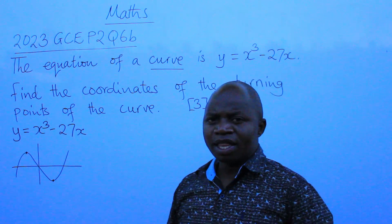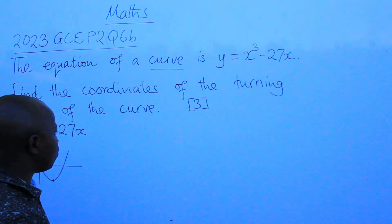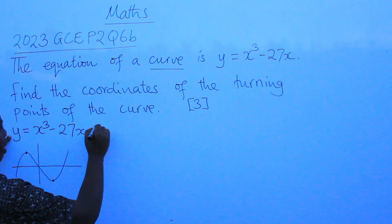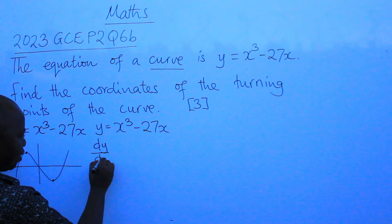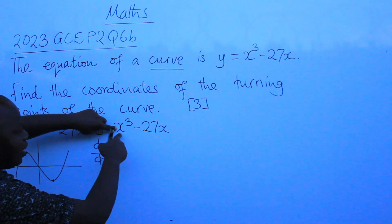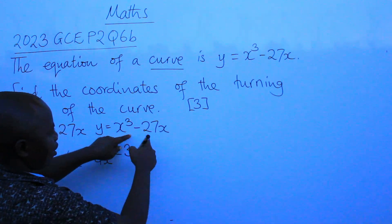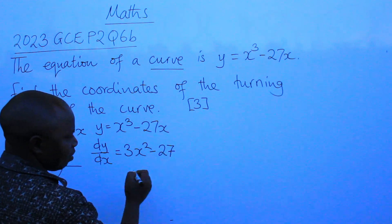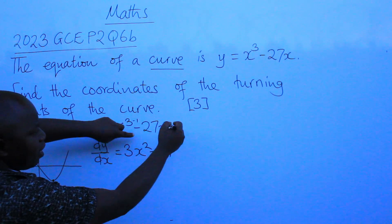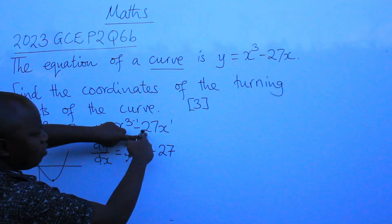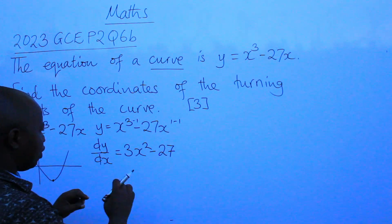To find the turning points, the first thing you do is differentiate the curve equation. So since y equals x³ minus 27x, our dy/dx will be: differentiate x³ to get 3x², then differentiate 27x to get 27. So dy/dx equals 3x² minus 27. When differentiating 27x, the power on x is 1, and 1 minus 1 gives 0, which is why x disappears.